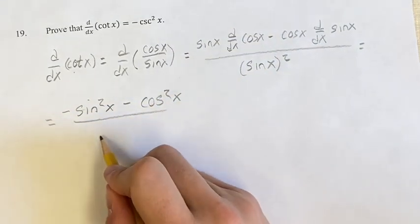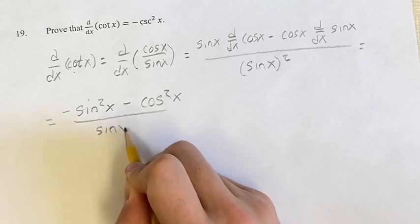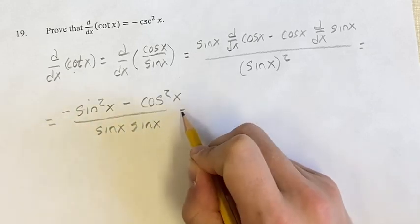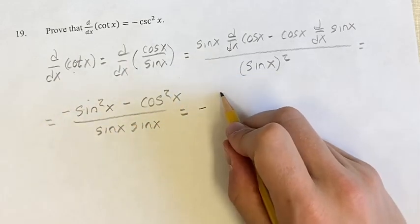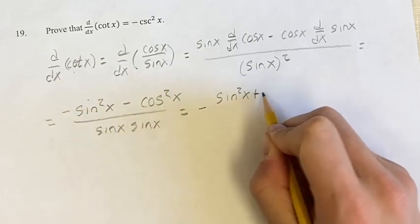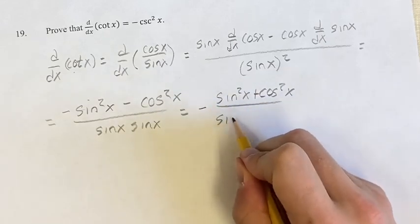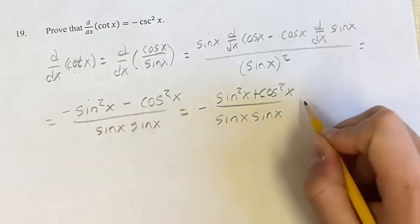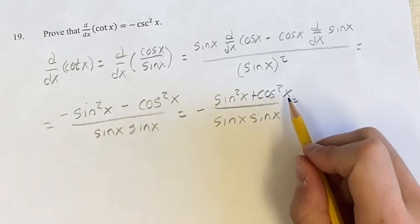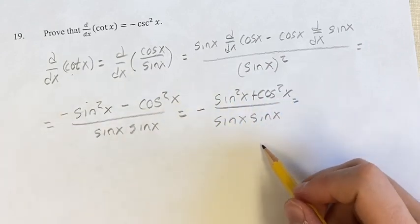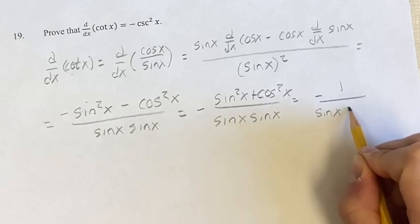This is over sine x times sine x. If you pull out a negative from the numerator, we're left with negative times sine squared x plus cosine squared x, over sine x times sine x. Since sine squared x plus cosine squared x equals 1, this simplifies to negative 1 over sine x times sine x.